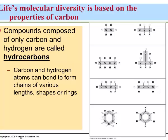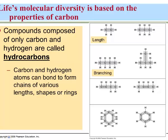Compounds composed of only carbon and hydrogen are called hydrocarbons. The grayed area in each of these molecules is referred to as the carbon skeleton. Hydrocarbon molecules are going to be non-polar molecules, which means that they're very hydrophobic. Because of carbon's tetravalent nature, we can build carbon skeletons in a variety of ways — varying the length, the branching pattern, adding double or triple bonds, and carbon molecules can also form ring-shaped skeletons.